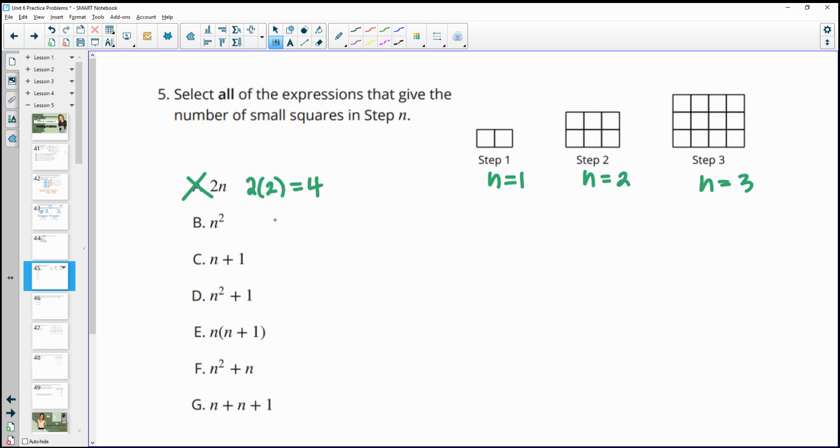n squared. So if we do 1 squared, that gives us 1. Well, there's not 1 square in step 1, so that's bad. Part C, 1 plus 1 gives us 2 for step 1, so that's good. 2 plus 1 for step 2 would give us 3. And there are more than 3 squares here. There's 2 here, 6 here, and 12 here. So that fails in step 2.